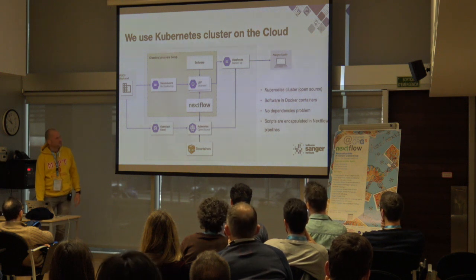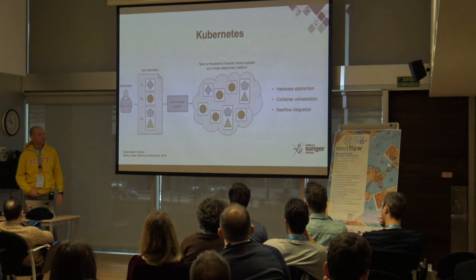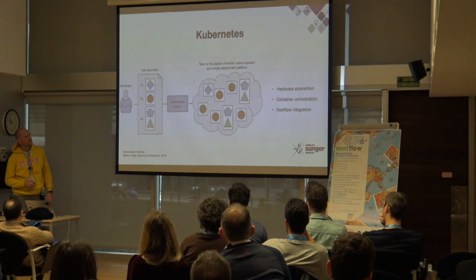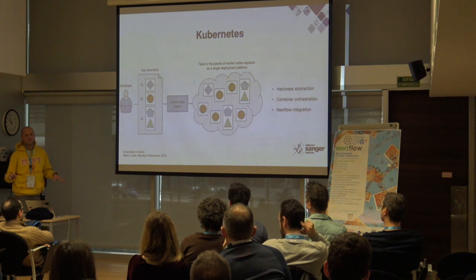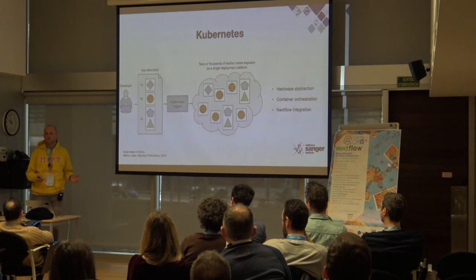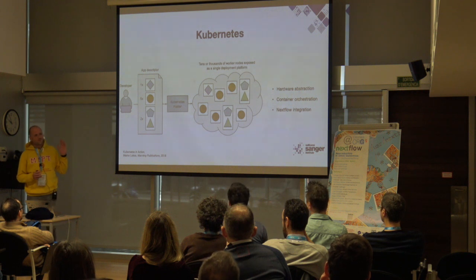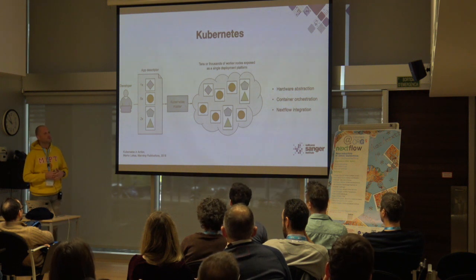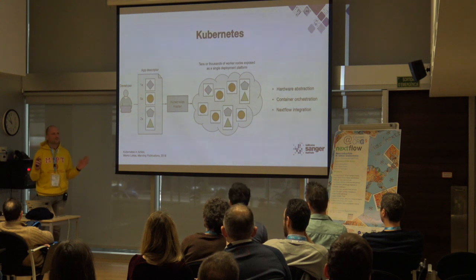Why did we choose Kubernetes? Kubernetes is basically a container orchestration platform. You have it on your cloud and you can forget about all the infrastructure — you don't think about instances anymore. The only thing you think about is Docker containers. You can start a Docker container and you don't even know which node Kubernetes will put it on — you don't know and you don't need to know. You just work with the container.